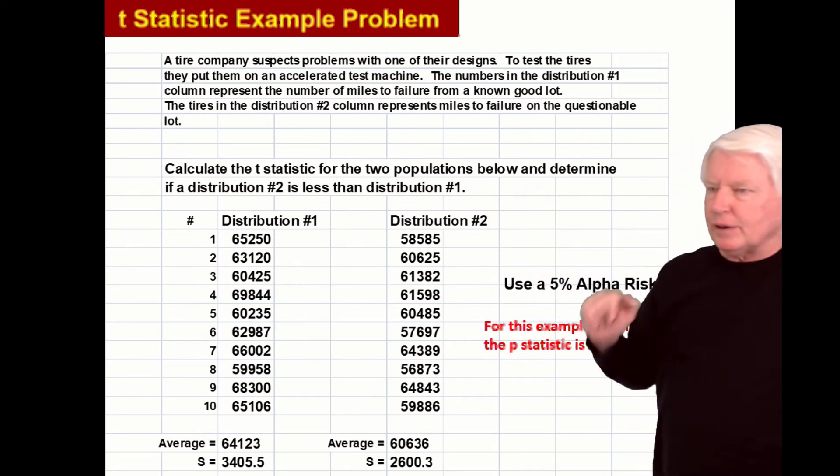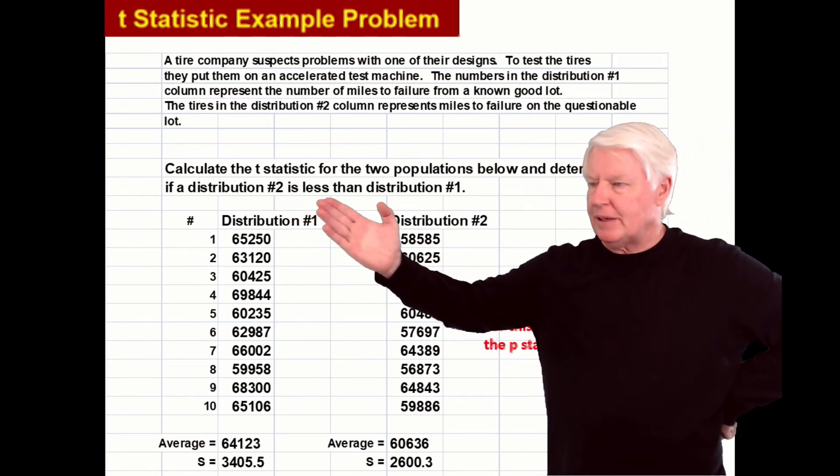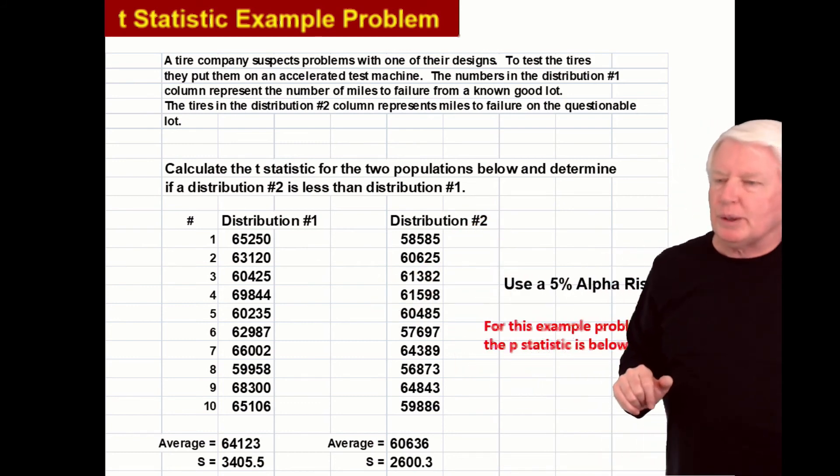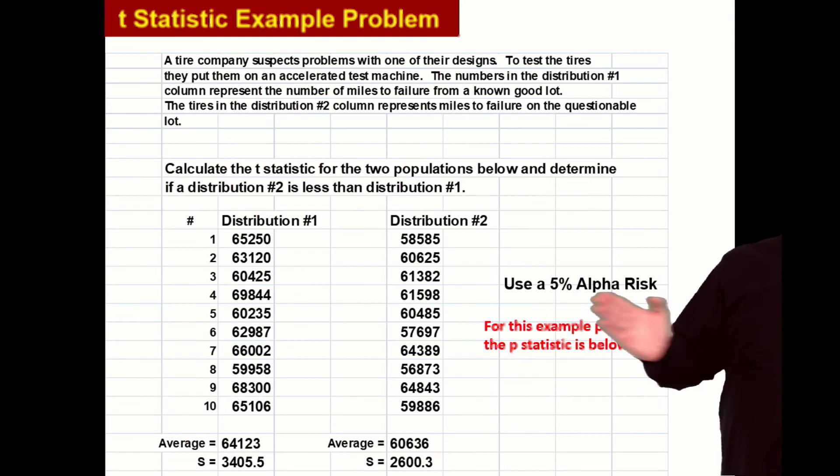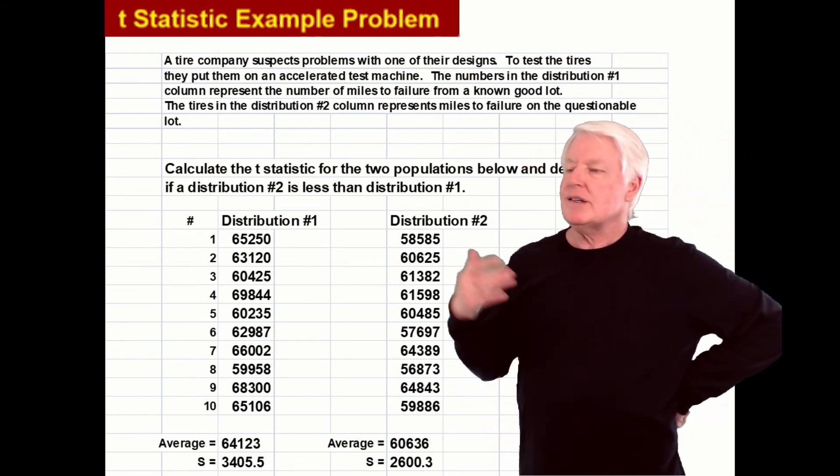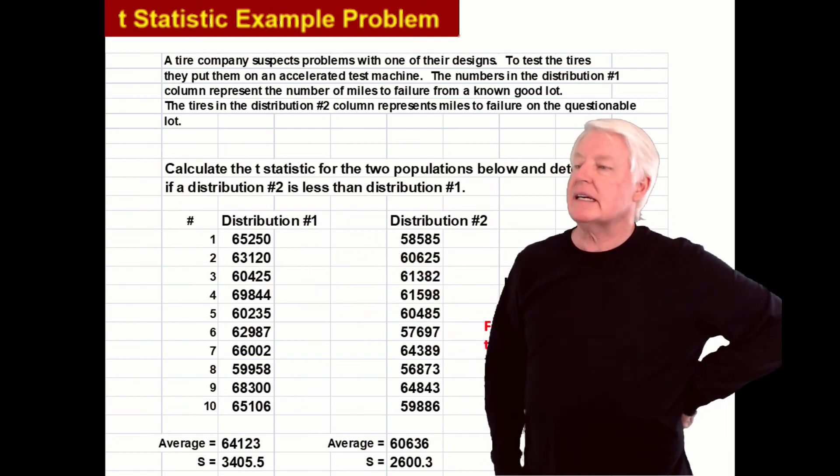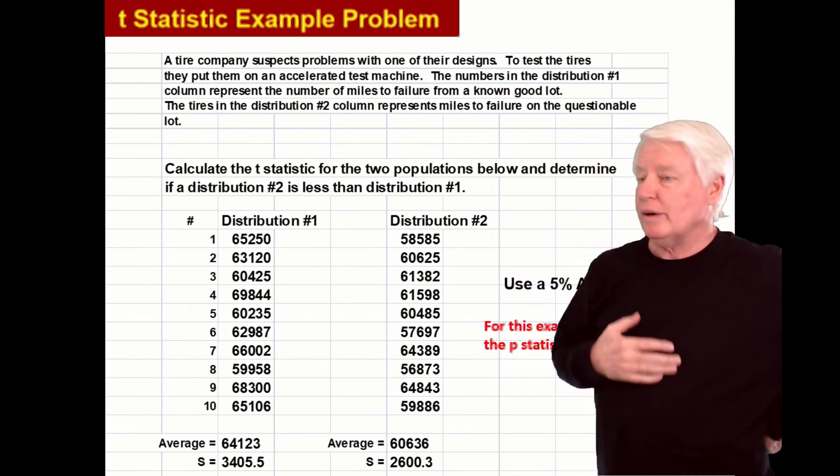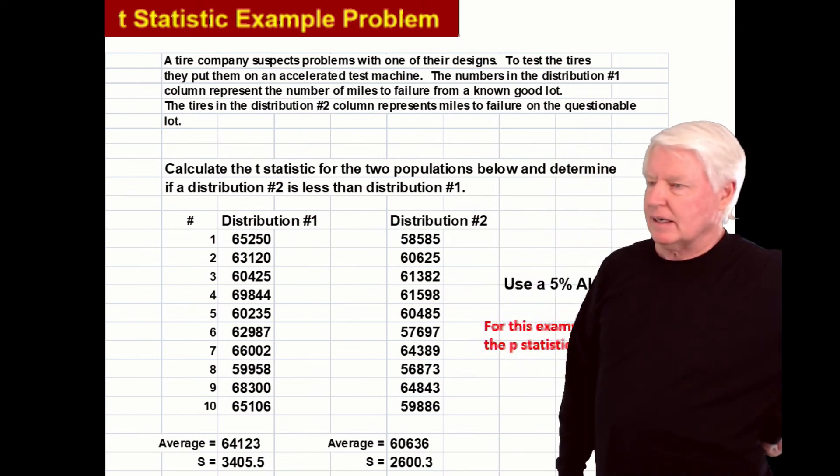Calculate the T statistic for the two populations and determine if distribution two is less than distribution one. I plugged it into my computer program. My alpha risk was five percent. Remember that's the risk I'm willing to take. For this example problem the P statistic is below five percent. So there is a statistically significant difference between these two populations. If the degrees of freedom would have been 30 or over I would have used the Z statistic.